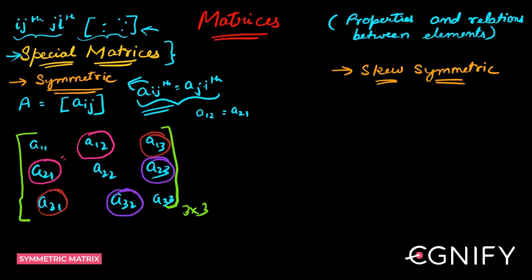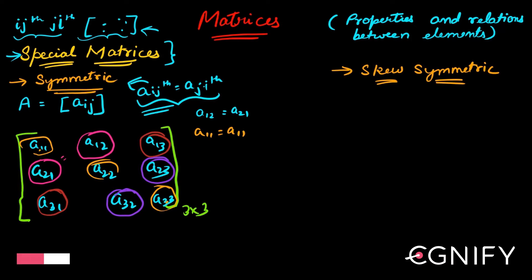What about the elements of the principal diagonal? They will remain as they are — they can be anything, that doesn't matter, because A11 will always be equal to A11. So we don't need to worry about these elements. But as far as the off-diagonal pairs are concerned, if A12 equals A21, A13 equals A31, and A32 equals A23, then I can say this particular matrix is a symmetric matrix.